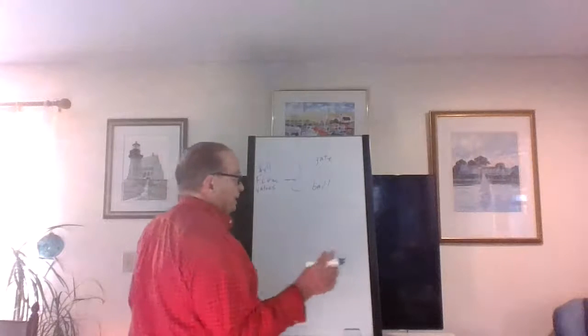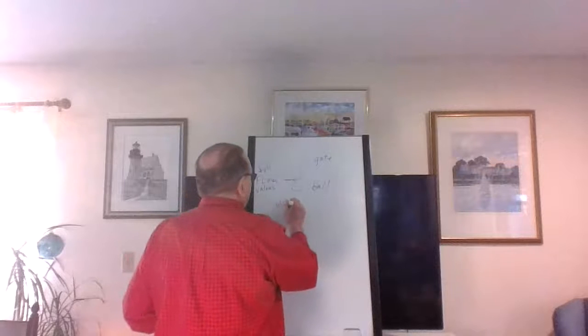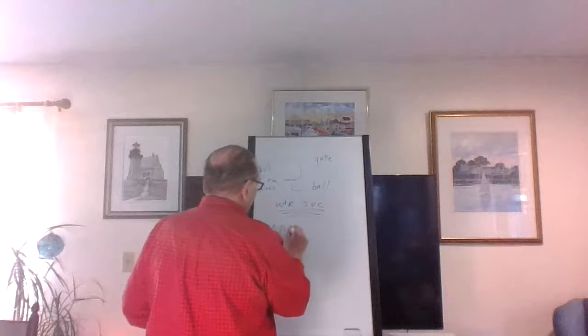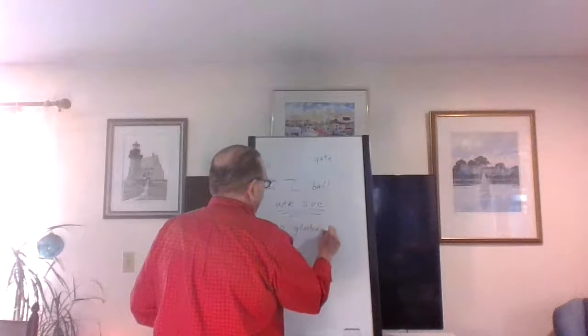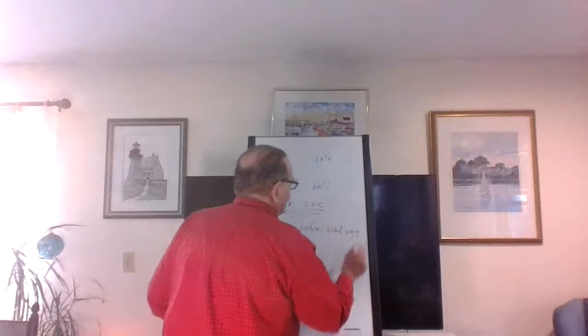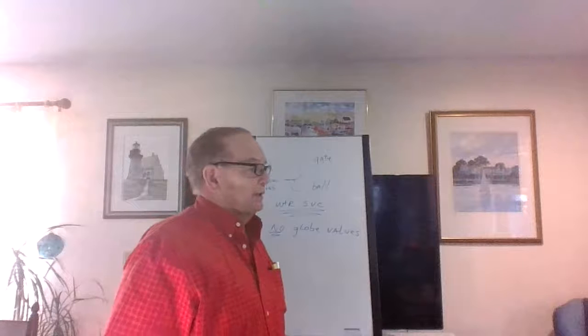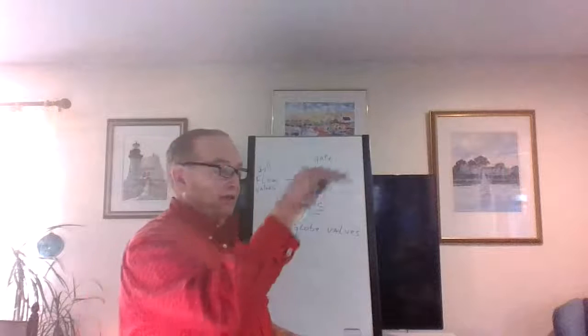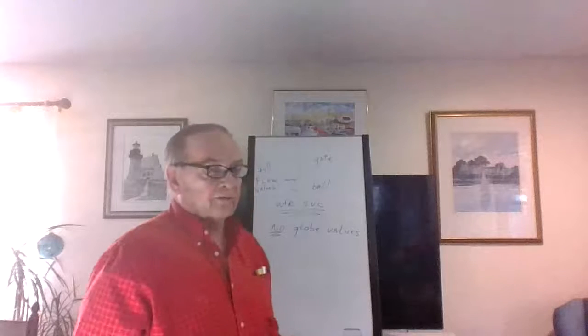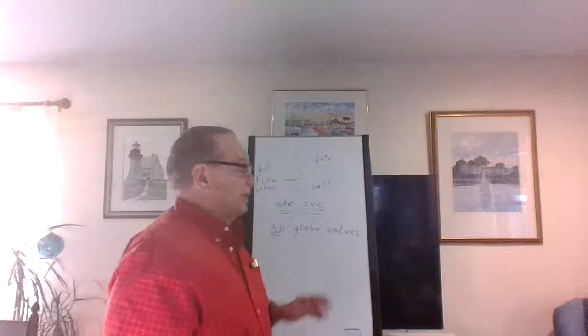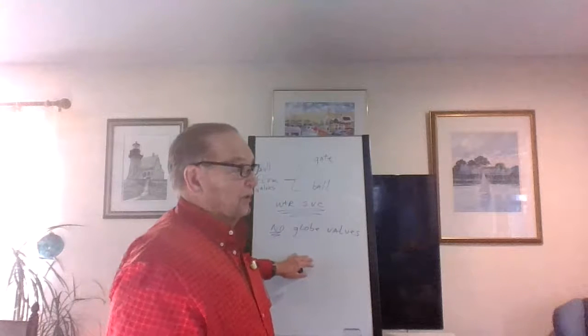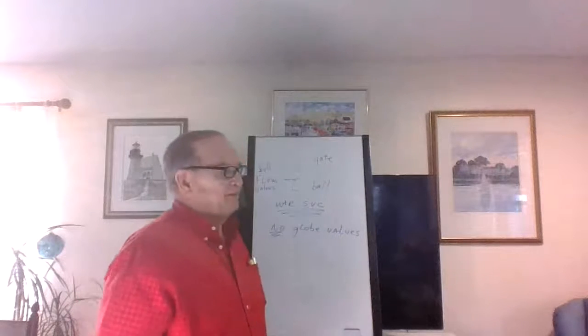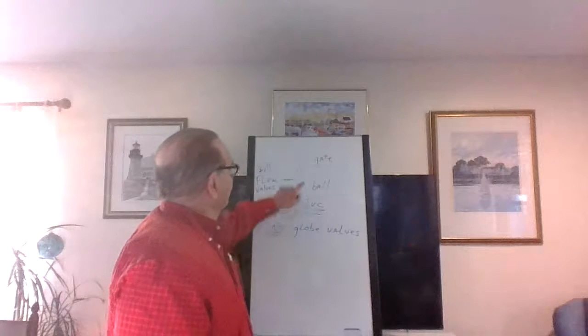No globe valves. A globe valve would be like a stop and waste or any of those other valves where you look in the valve and you can't see through the other side because it goes in and does kind of one of these things. It's too restrictive. They do make a stop and waste like three-quarter inch and I've seen somebody try to slide one by when I was an inspector. Little Compton is like, that's not a legitimate valve.